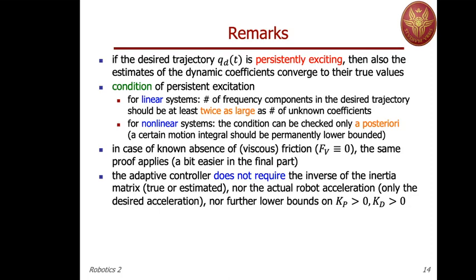The Slotine and Li adaptive controller has become the standard because it avoids several limitations that earlier adaptive controllers had: the need to invert the inertia matrix and update the inverse, estimation of actual robot acceleration, and complex lower bounds on gains. The only requirement is that PD gains be positive definite, typically chosen as diagonal matrices.